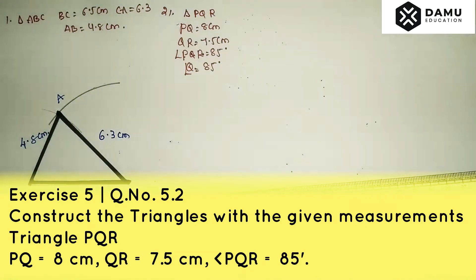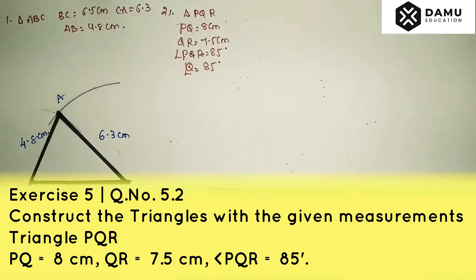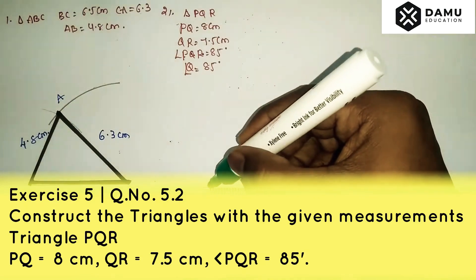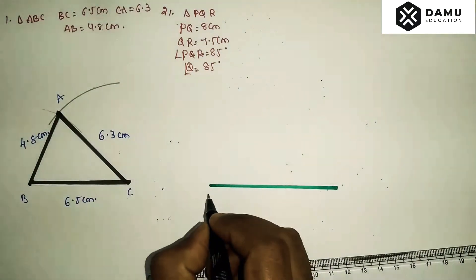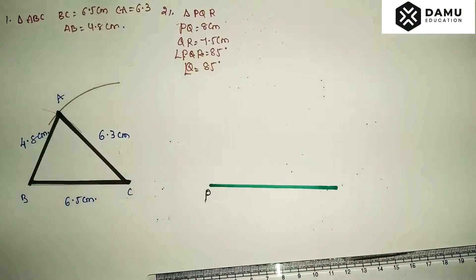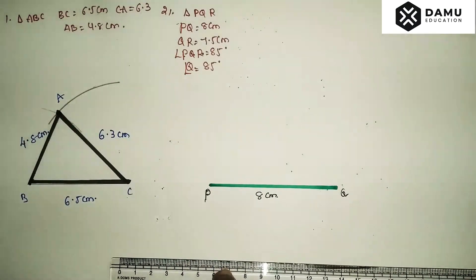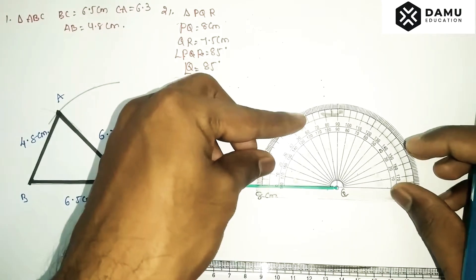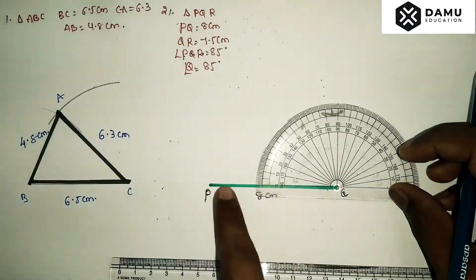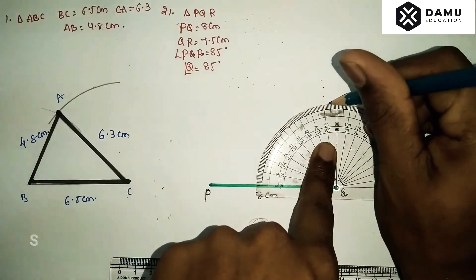Draw line segment PQ 8 cm, from 0 to 8 cm. Then we have to measure the angle at Q, that is 85 degrees. Take your protractor like this. This line should coincide with PQ. Measure the angle from 0: 10, 20, and so on. This is 85.